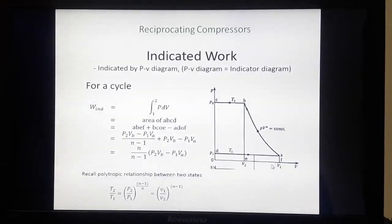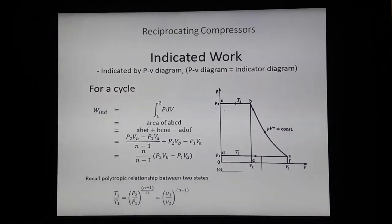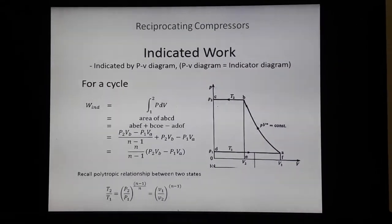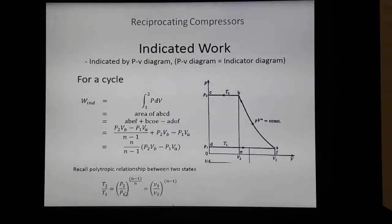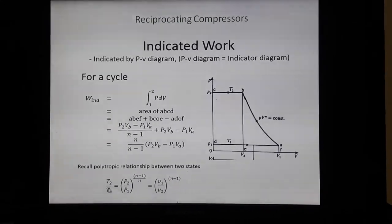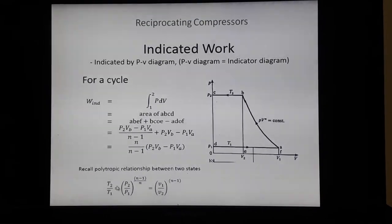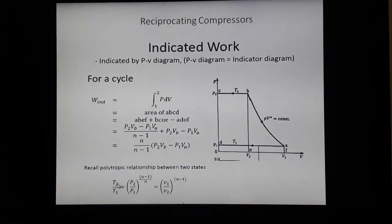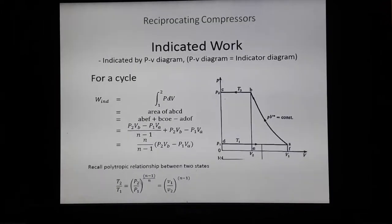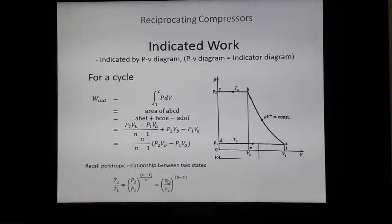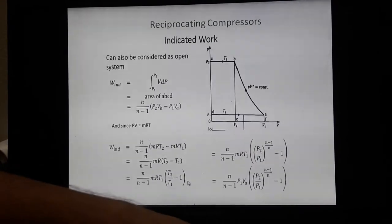For the polytropic process A to B, the relation between temperature ratio, pressure ratio, and volume ratio is given as: T2/T1 = (P2/P1)^((n−1)/n) = (V1/V2)^(n−1).